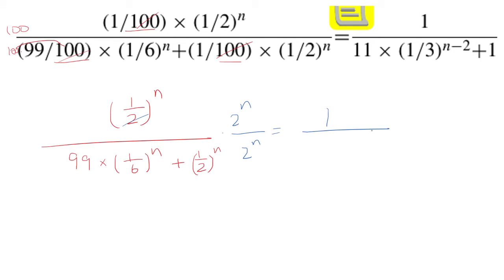And we're left with 1 over 99 × (1/6)^n × 2^n. So this 2^n is going to distribute here. So you basically get (1/6)^n × 2^n plus, and then 2^n × (1/2)^n is going to cancel and you're just going to be left with 1.